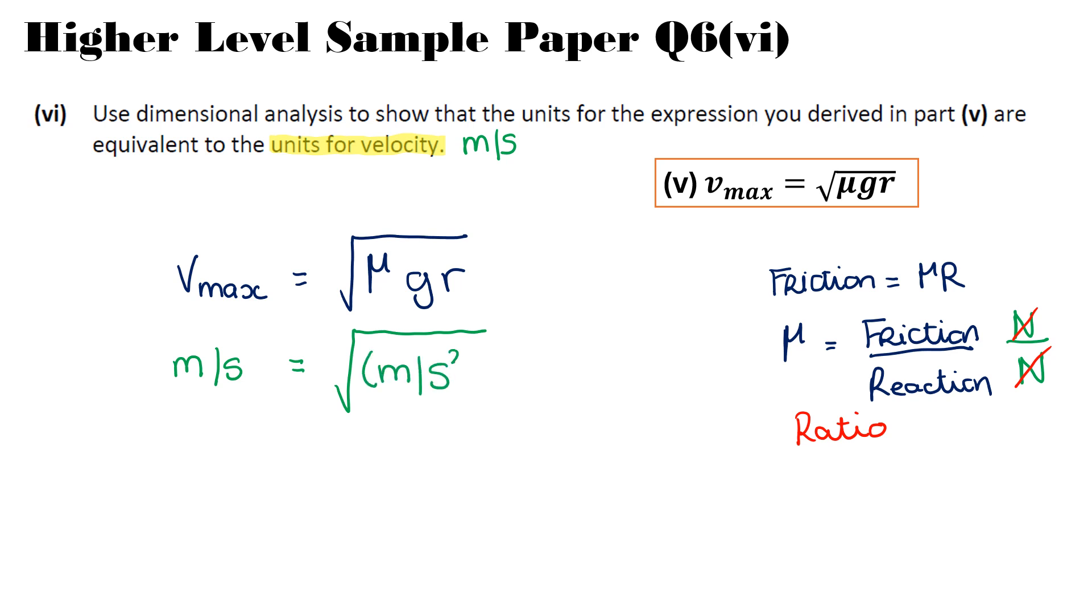So mu has no units because it is a ratio. So our gravity, g is acceleration due to gravity, times r, which is our radius, which is meters. So that is meters per second squared times meters. This cleans up to be meters squared per second squared. And then square root that, square root the top, square root the bottom. And we're left with just meters per second.